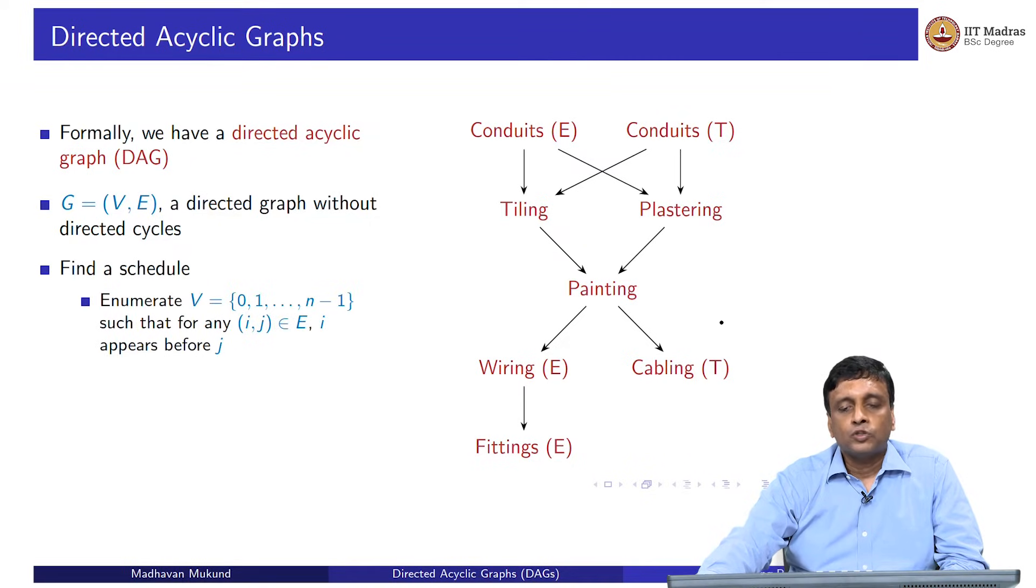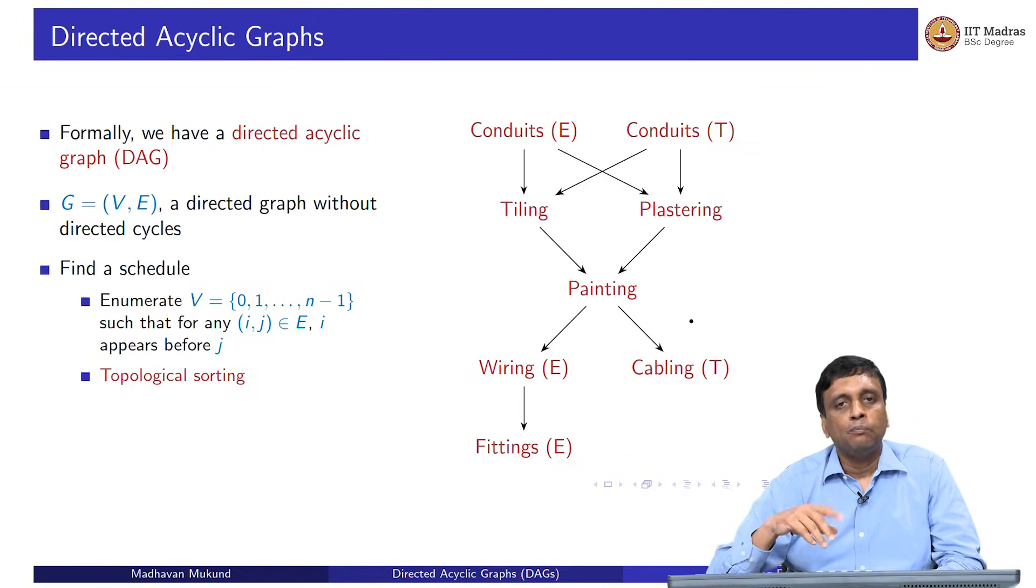Finding a schedule amounts to listing out these vertices in a sequence. This is the order in which I am going to process the work. You can think of it in such a way that I never have an edge going from something which is later in the sequence to something earlier in the sequence. I do not do conduits after plastering. In the sequence, all the edges must be respected by the sequence. If I appears before j, then there cannot be an edge from j to I. This process of enumerating the vertices in a consistent way with the constraints, constraints being the edges in my directed acyclic graph, is sometimes called topological sorting. I want to take a graph which has many possible sequences which are compatible and produce any one. This is called topological sorting.